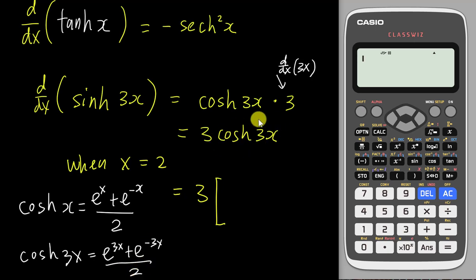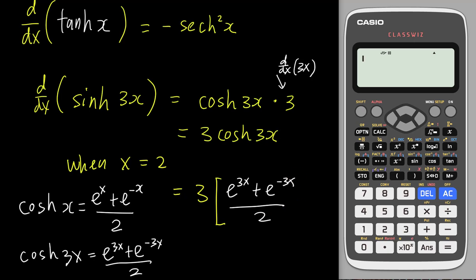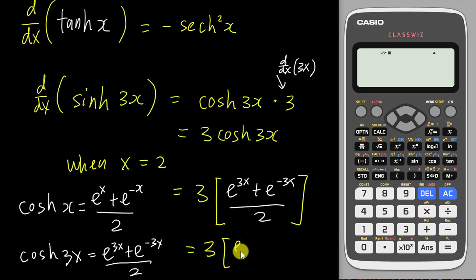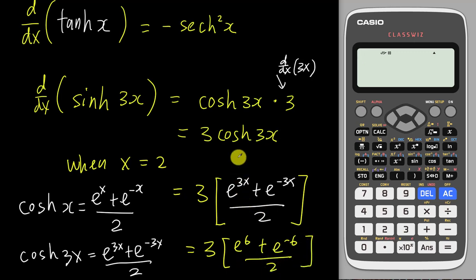So the full expression becomes (e to the power of 3x plus e to the power of negative 3x) divided by 2. When x equals 2, we get e to the power of 6 plus e to the power of negative 6, divided by 2. Let me now type this into the calculator.